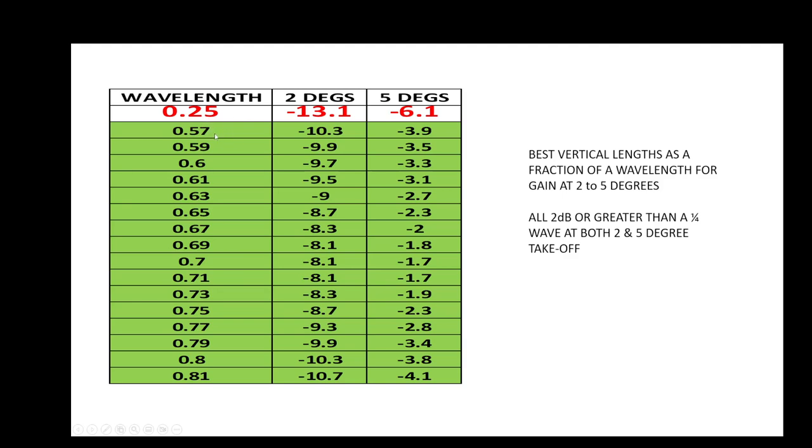And in fact, to be specific, 0.57 of a wavelength to 0.81 of a wavelength, we are basically 2 dB or greater better at both two and five degrees off the horizon compared with a quarter wave. So if you have a non-resonant single vertical which you're trying to use on several bands, around half wave to about 0.8 of a wavelength long is where you'll have your best performance for that antenna in terms of DX, in terms of low angle radiation.